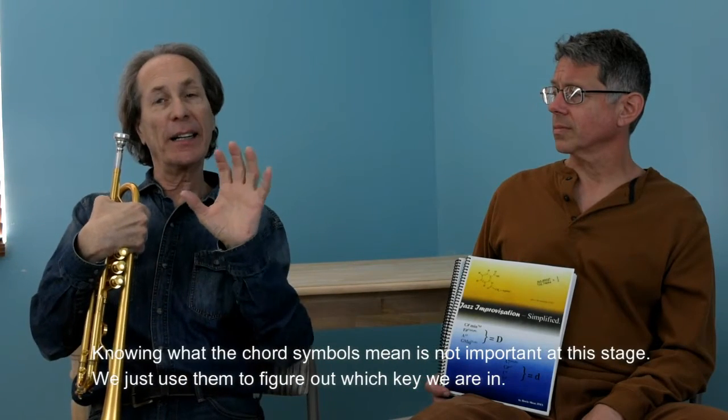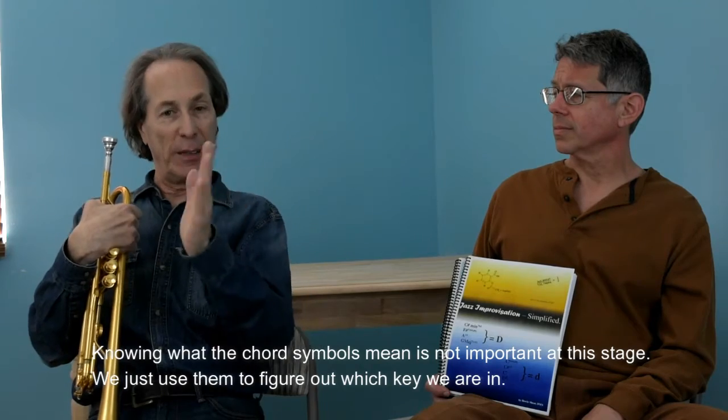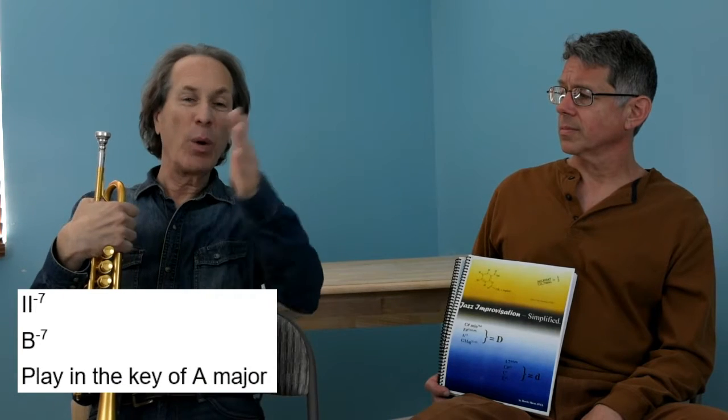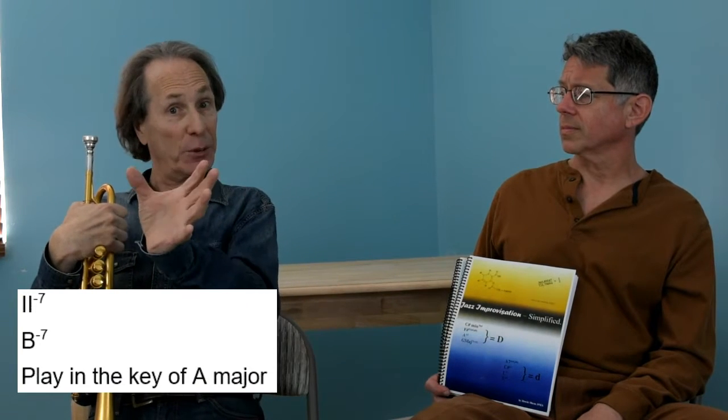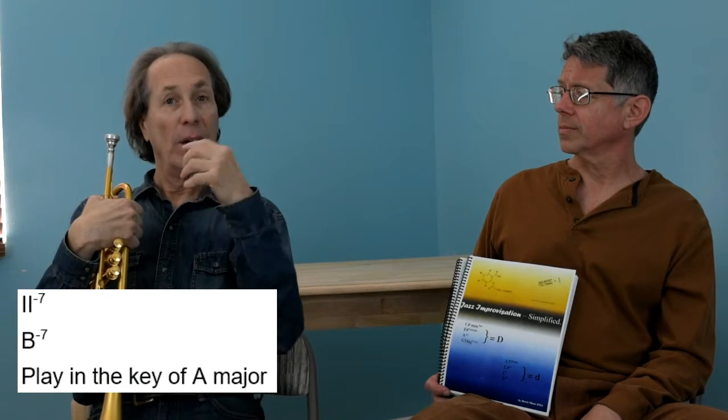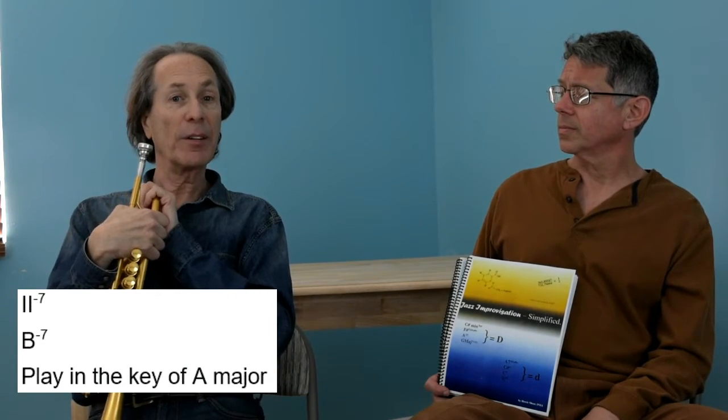Before the A major chord comes up, the on-ramp is B minor seven, E seven, A major seven. Every time I see a minor chord in a major two-five-one, I treat it as a two chord of a key. So if B minor seven appears, I go back one step to find the one chord — and those are the notes I play on that chord change.